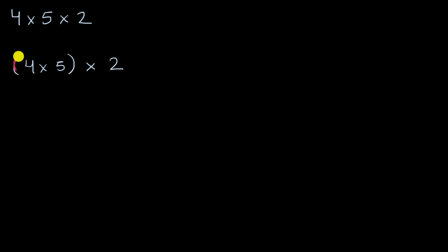And what would you have gotten? Well, the 4 times 5 part, that is, of course, 20. And then you multiply that times 2, and you would get 40, which, of course, would be correct. 4 times 5 times 2 is indeed equal to 40.